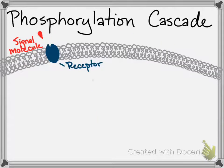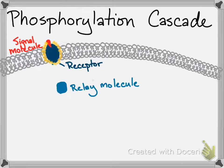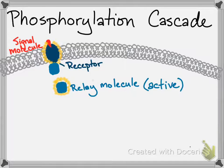Let's look at how they work in a phosphorylation cascade. At the cell surface, a signal molecule interacts with a receptor protein. Once attached, the signal molecule changes the shape of the receptor protein into an active form. This could activate a relay molecule inside the cell. That active relay molecule activates the first kinase, probably by binding to it or attaching a phosphate.